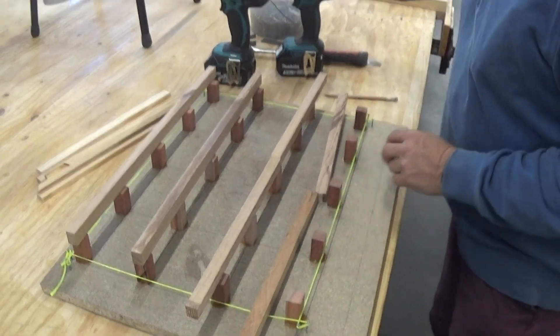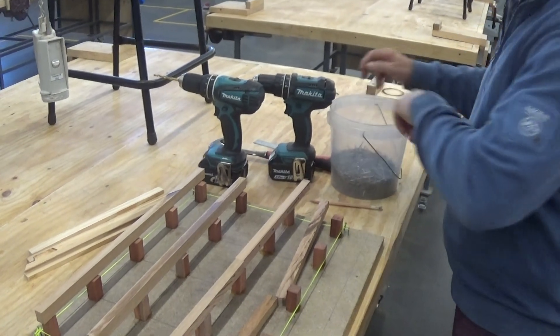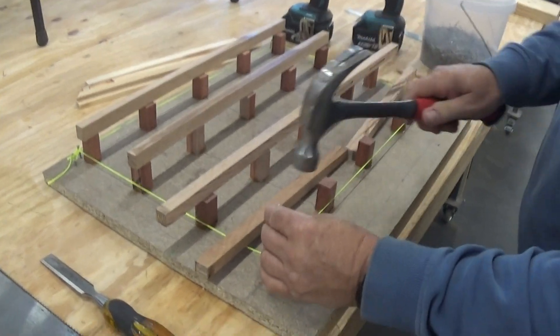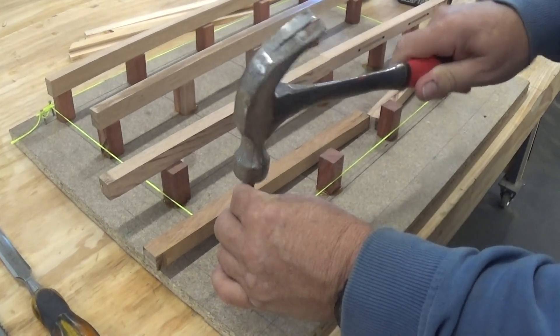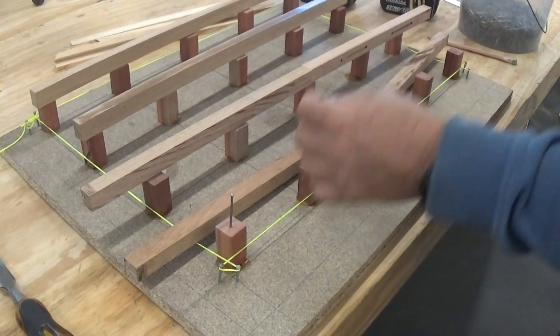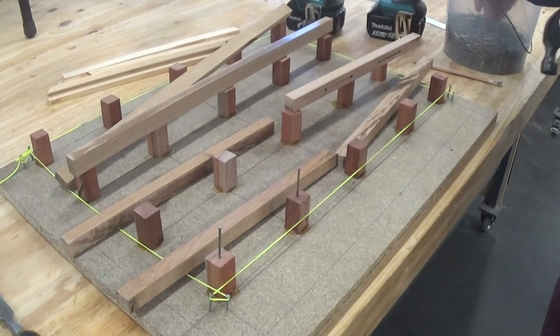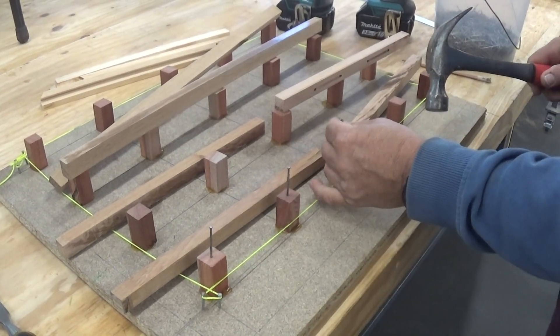Now, because bearer stumps come with spikes on them, what you'll need to do on each of these is just tap in a 40 millimeter nail. Because we want to do this like it is in real life.